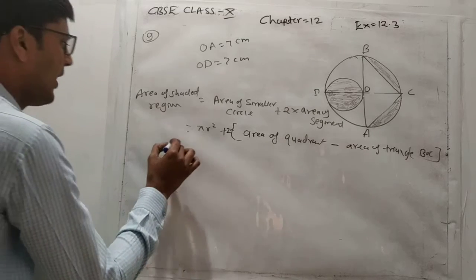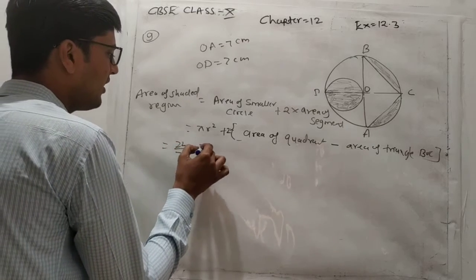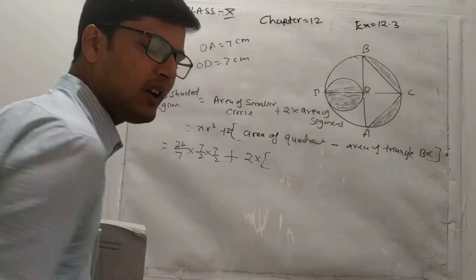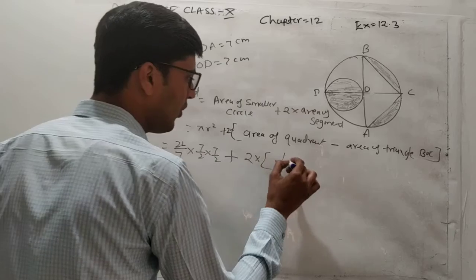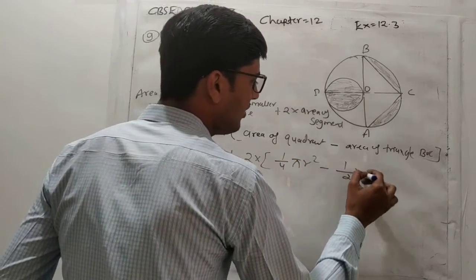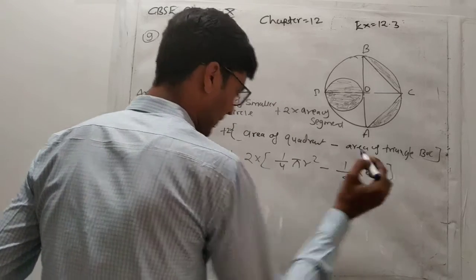So now this is 22 upon 7, and here radius is 7 upon 2 into 7 upon 2, plus 2 into area of quadrant, which is 1 fourth of pi r square. And area of right angle triangle is 1 upon 2, base into height.